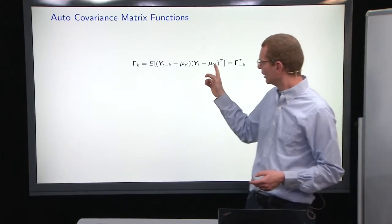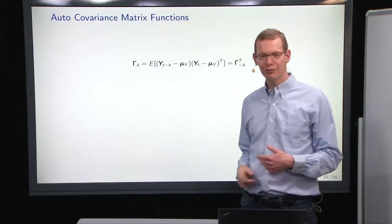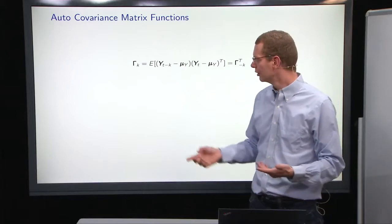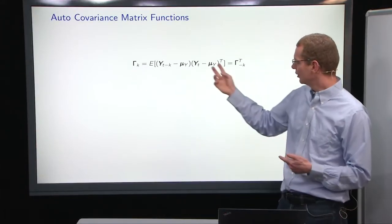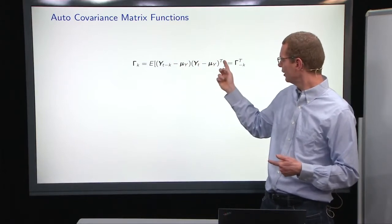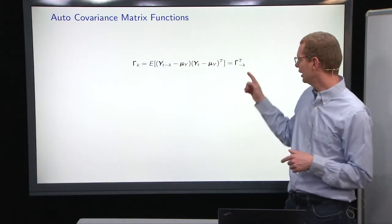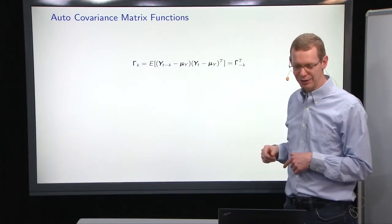That also means that going forward backwards in time, which was before equivalent, so gamma of k was equal to gamma of minus k. Now, since given this transposing here, we will have to transpose to get to the negative time lag here.